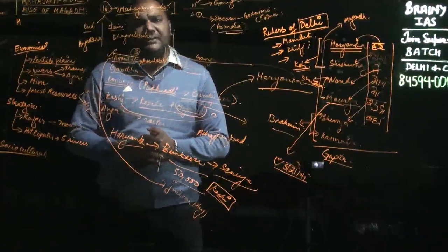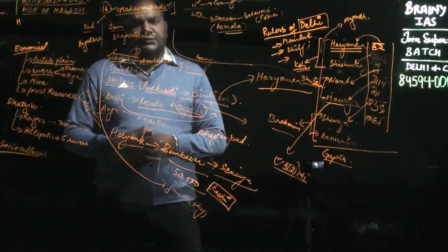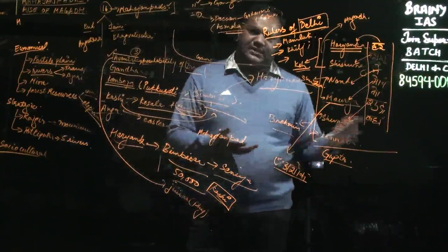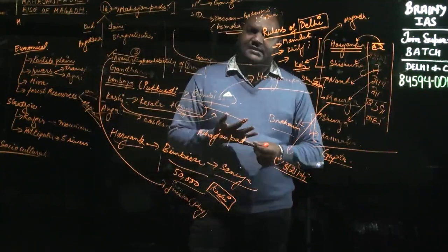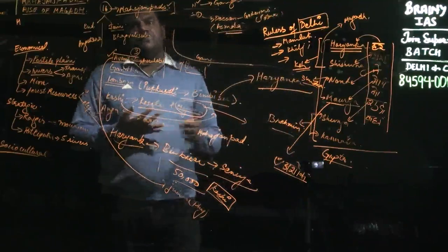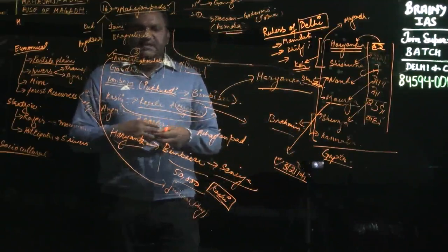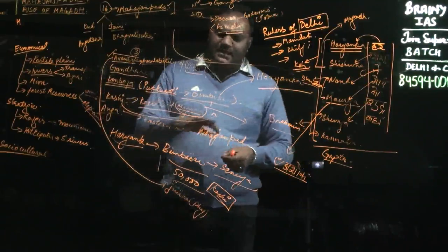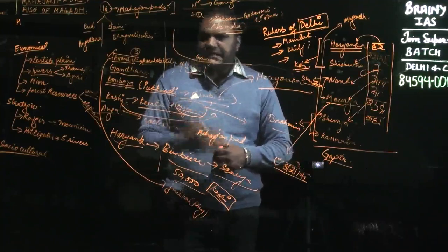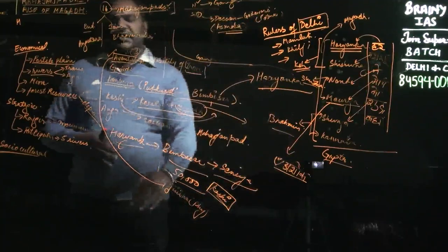His father Bimbisara was imprisoned by Ajatashatru. When Bimbisara saw that his son was coming, he realized it would be better to kill himself than be killed by his son. So he opened his ring, consumed the poison, and died. Our history starts from where the son killed the father.